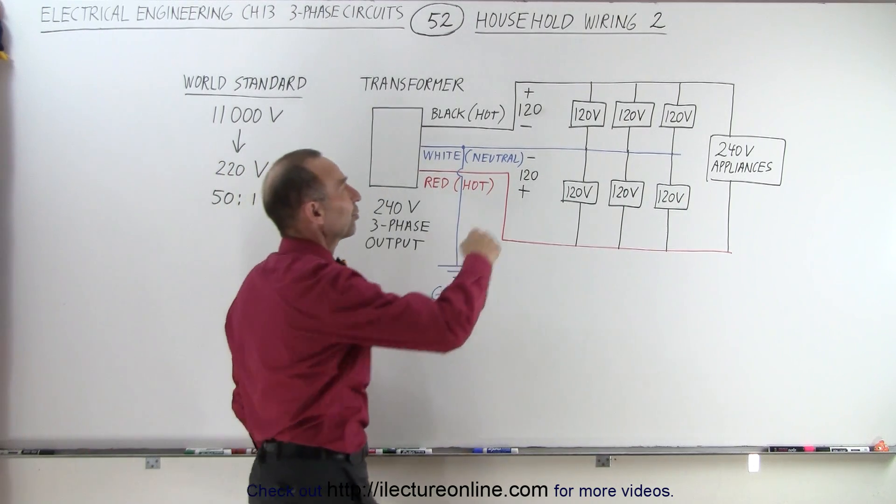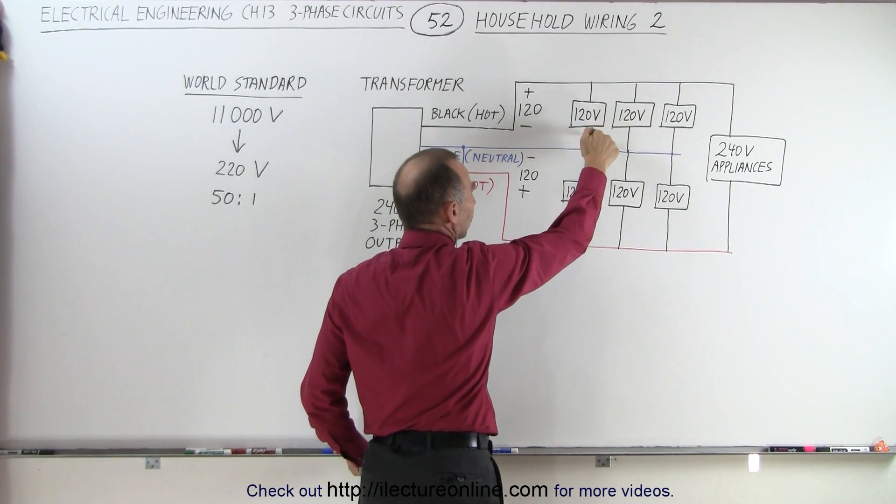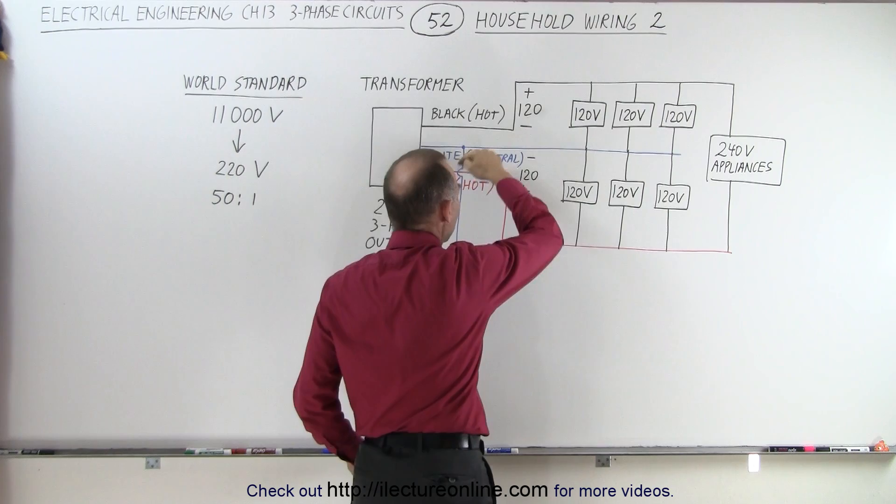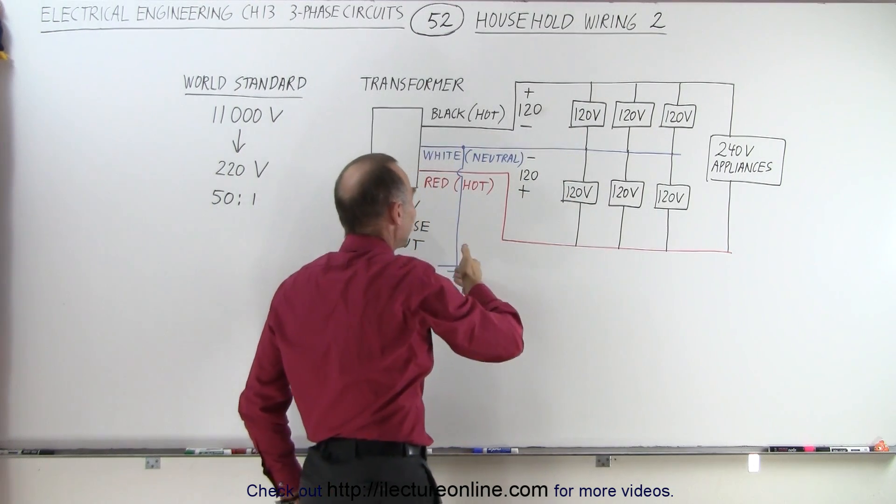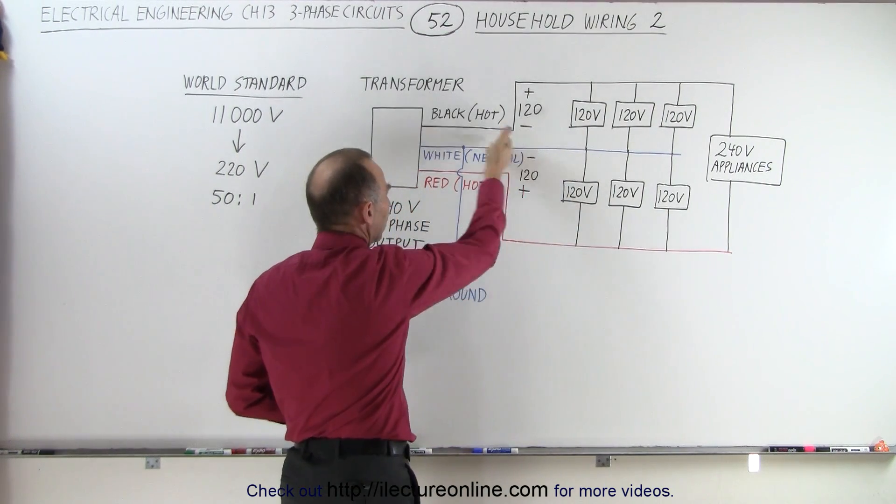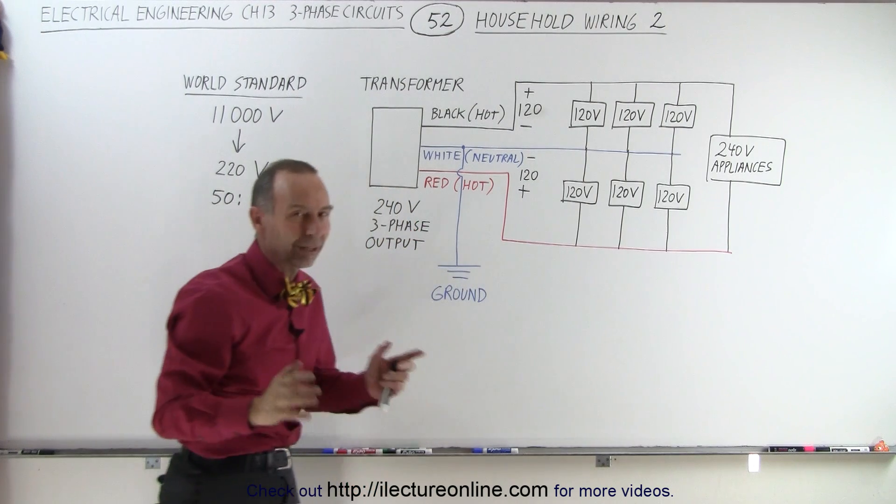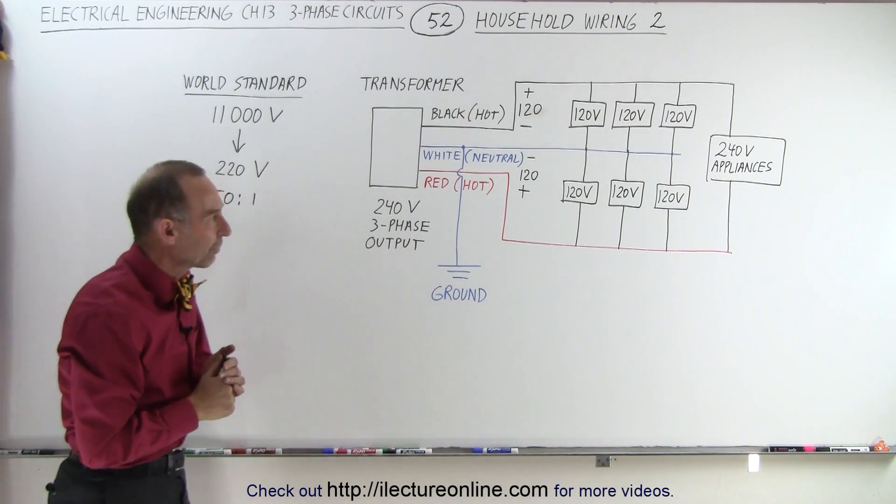What the ground does for us is, if for some reason there's a short and a lot of current runs through, the current can then escape in a way and make it safe. So instead of going to the person it can be pulled into the ground and so there's less chance of electrocution.